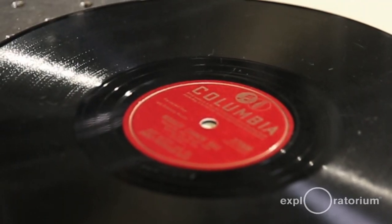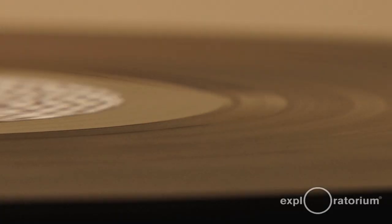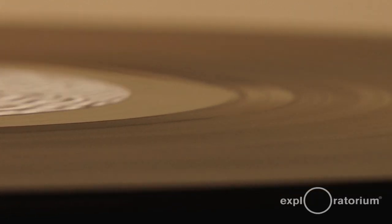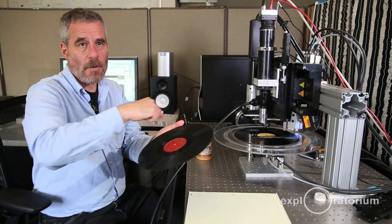This is a disc record. It's a commercially pressed 78 RPM disc. It was issued by Columbia. This was probably from the 1940s. Because here there's a groove that goes around like a spiral.